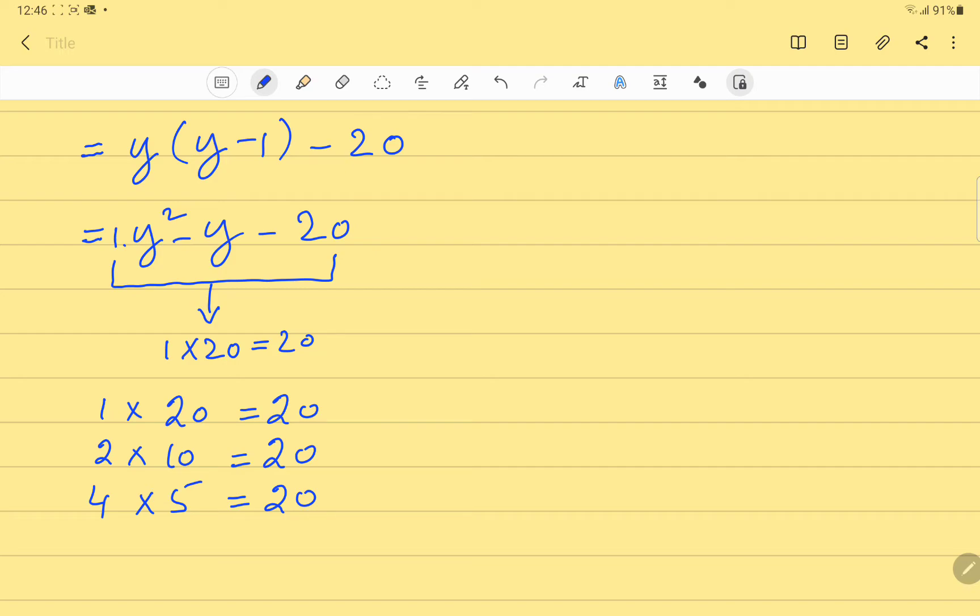Now, which one can give us minus 1, which is this one minus 1y? Obviously, the last one, this one. So, when we subtract 5 from 4 it will give us minus 1.